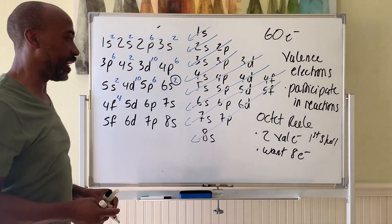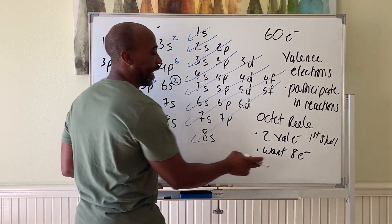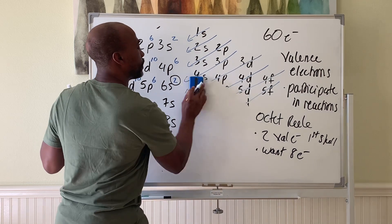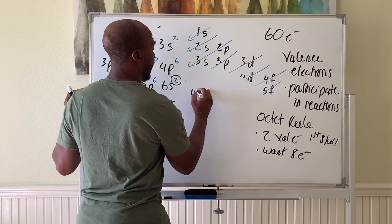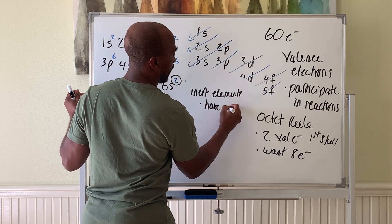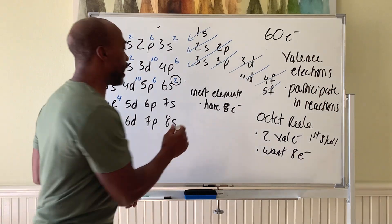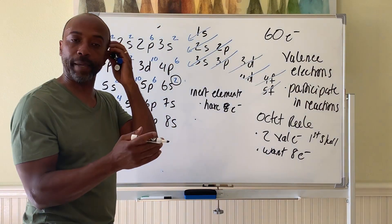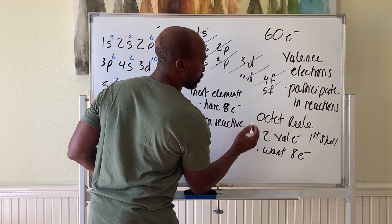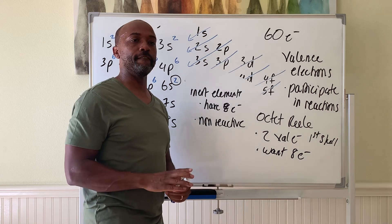Once they have 8 electrons, they're stable. In fact, elements that naturally have 8 electrons are called inert elements. Inert elements have 8 electrons already in the valence shell, and these do not participate in reactions — they are non-reactive. It's almost impossible to get them to combine with something else because they already have a complete valence shell.